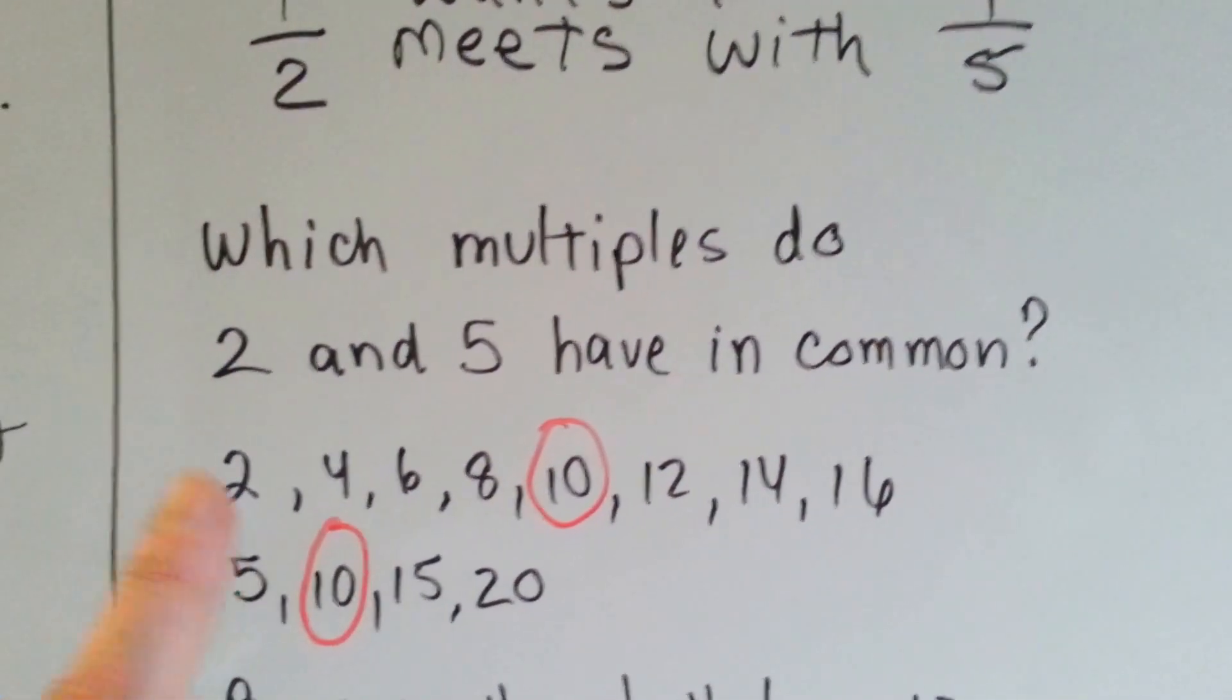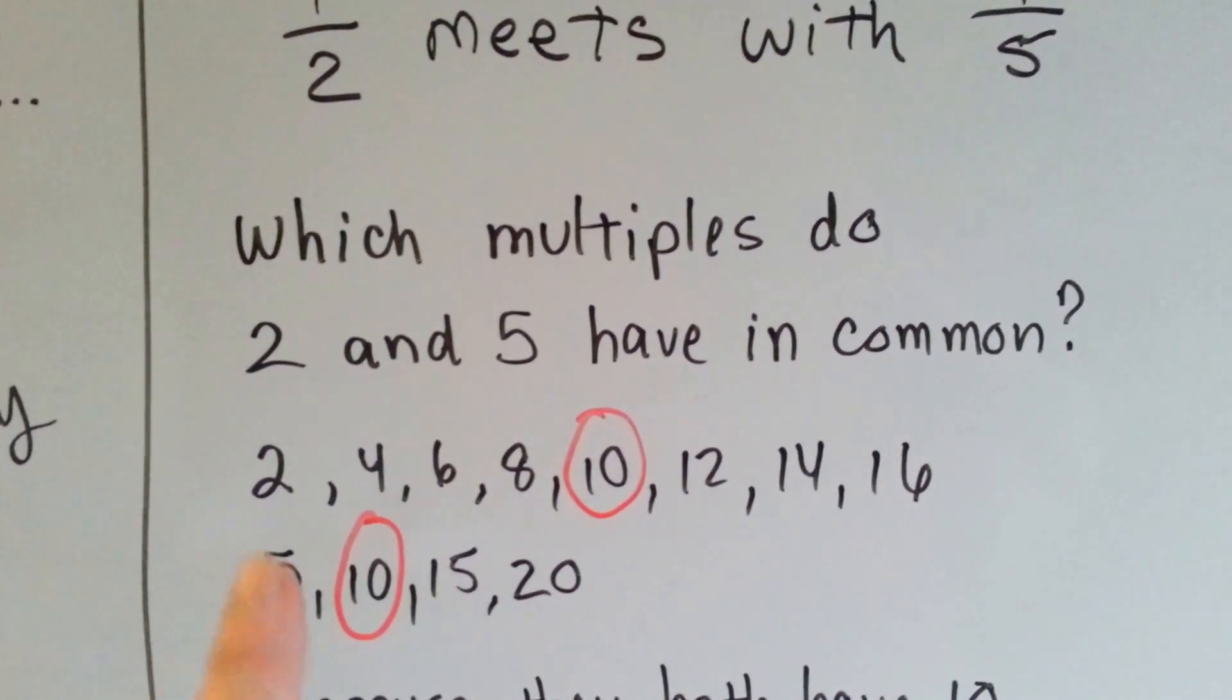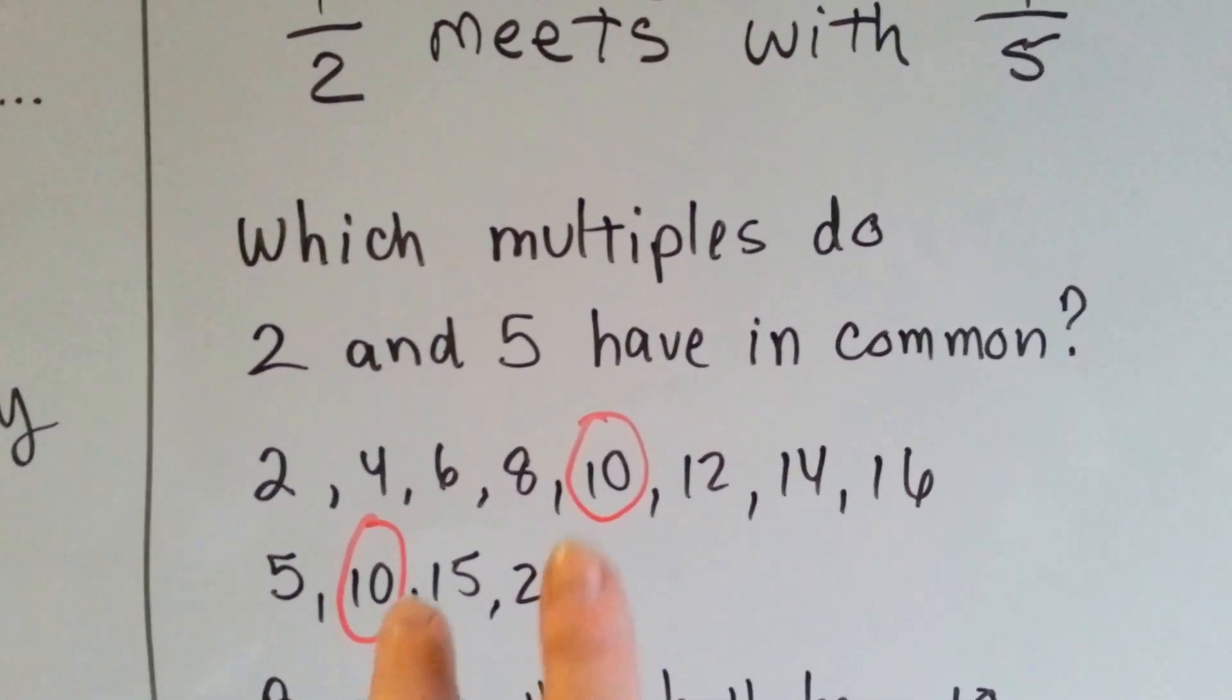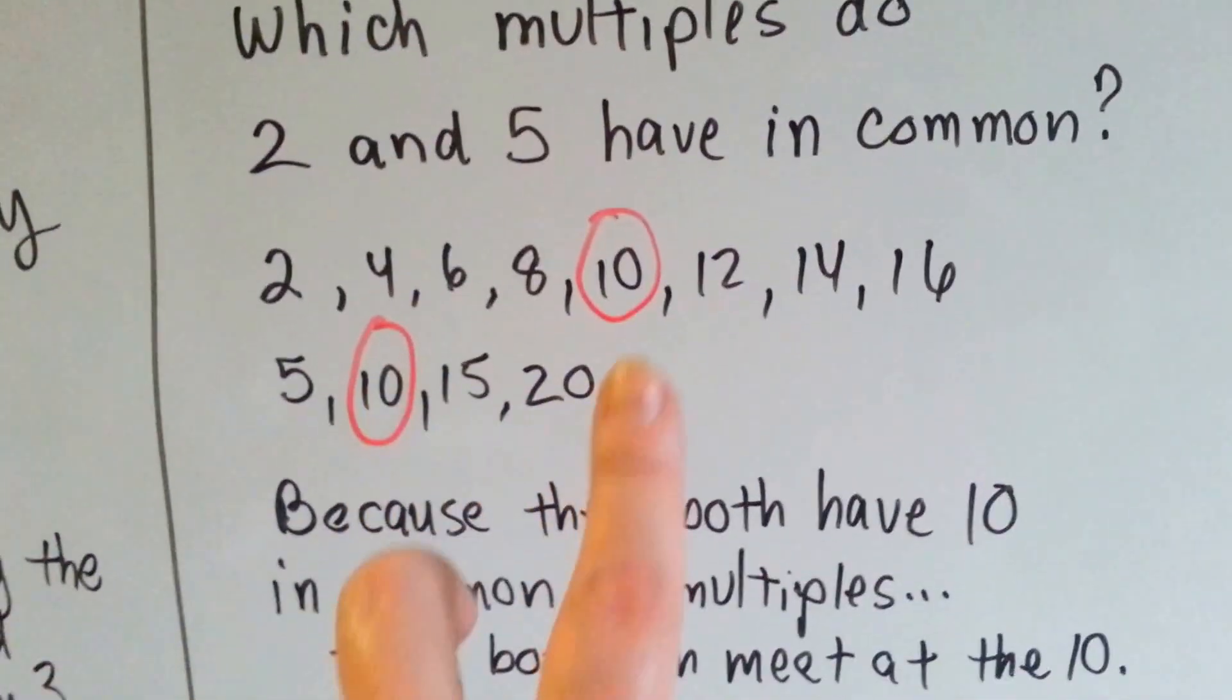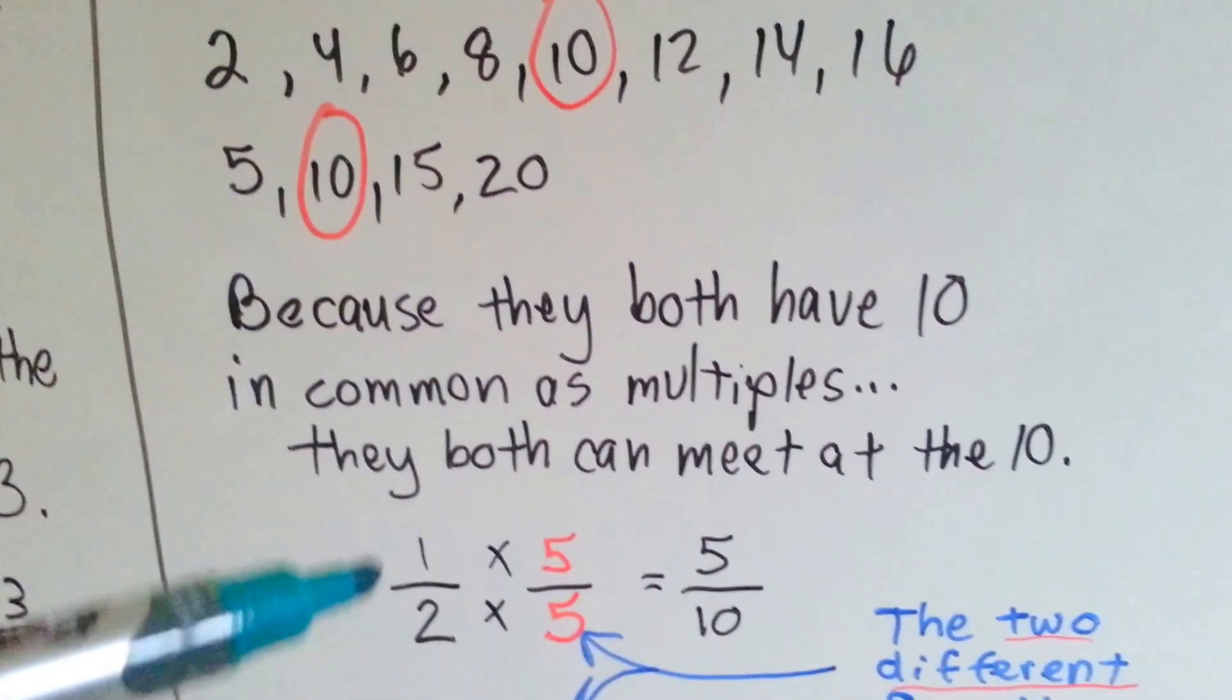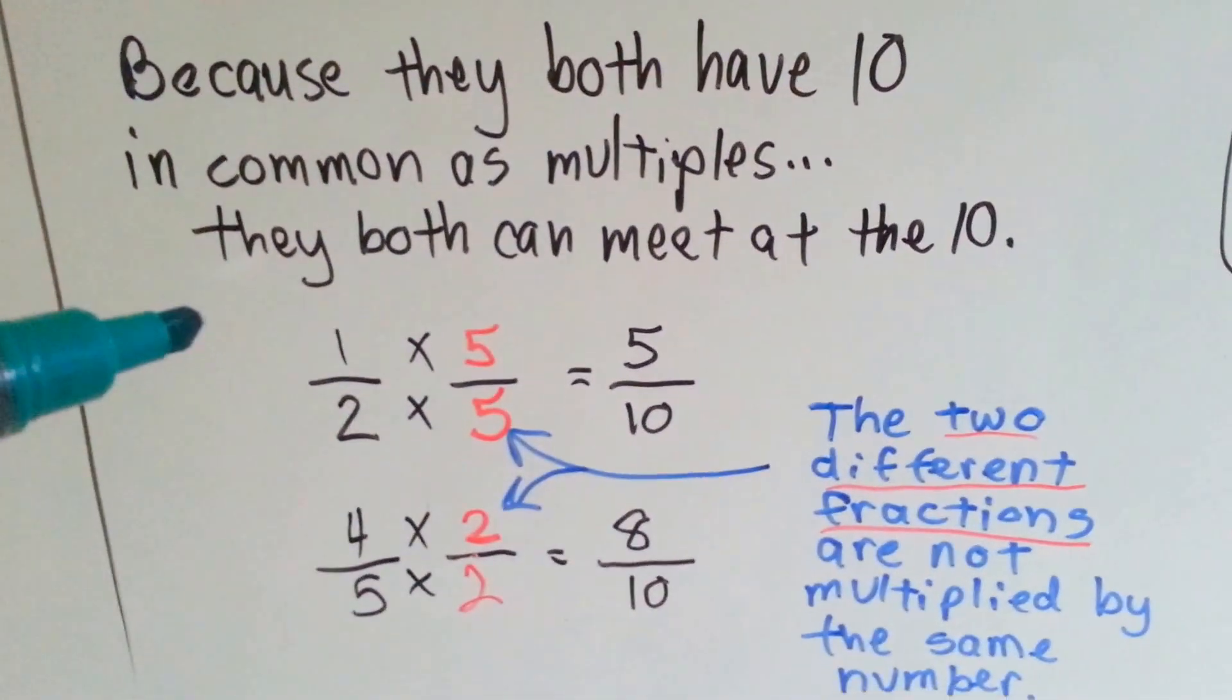Here's their multiples: 2, 4, 6, 8, 10, 12, 14, 16, and 5 is 5, 10, 15, 20. Well, the smallest number they have in common is the 10. So that's where they're going to meet at the 10's house. Because they both have 10 in common as multiples, they both can meet at the 10.